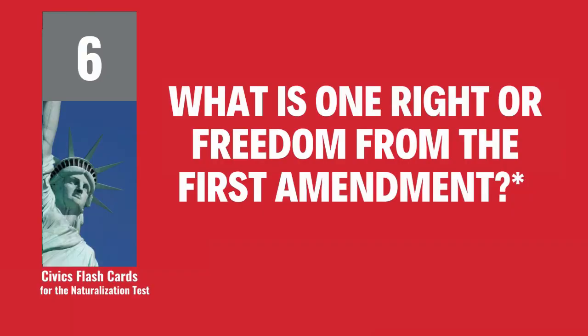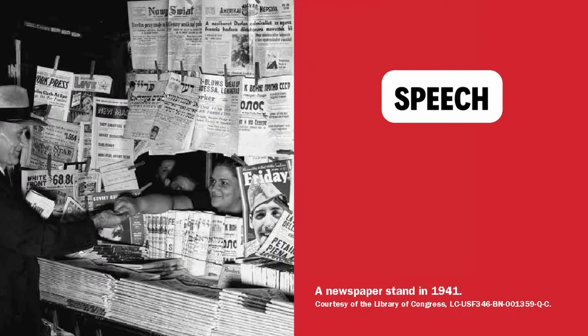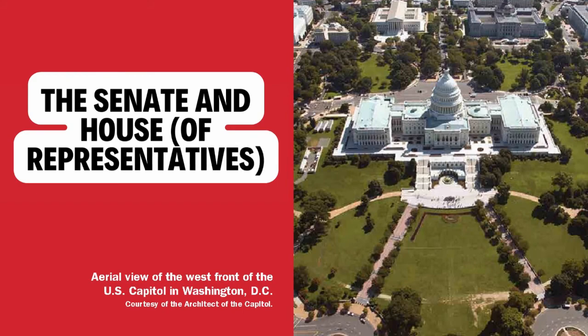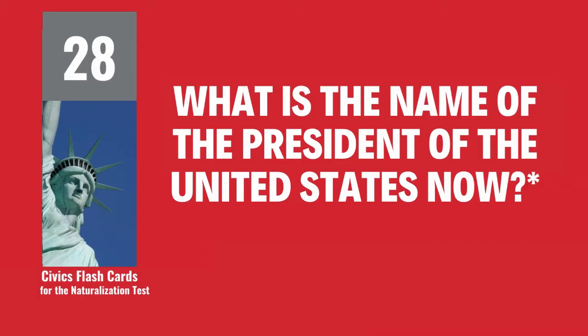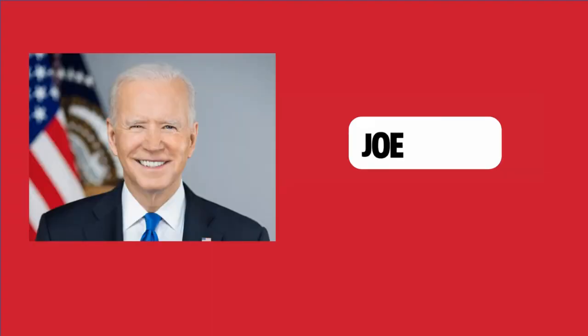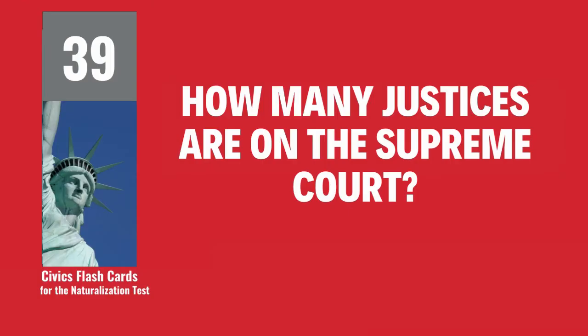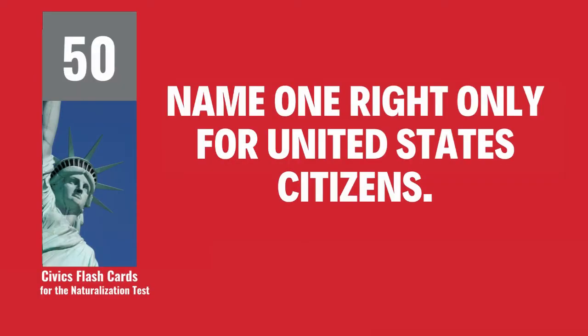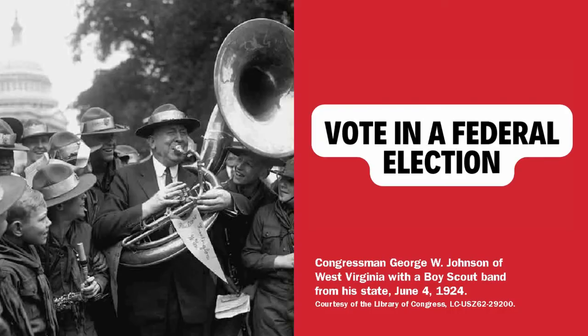What is one right or freedom from the First Amendment? Speech. What are the two parts of the U.S. Congress? The Senate and House of Representatives. What is the name of the President of the United States now? Joe Biden. How many justices are on the Supreme Court? Nine. Name one right only for United States citizens. Vote in a federal election.